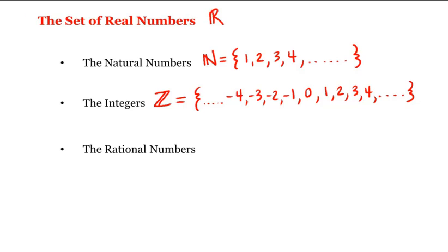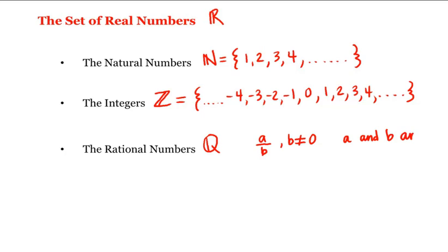The third subset to consider are what we call the rational numbers, and we represent the set of rational numbers by a capital Q. These are fractions or ratios of integers — A over B, where B is not 0, and A and B are integers.